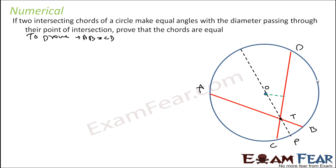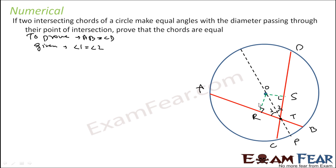What is given is that angle 1 is equal to angle 2. We have to prove these two chords are equal. What we can do is draw perpendicular lengths. Let this be R and let this be S. If we can prove OR is equal to OS, then we can easily say AB is equal to CD. We have already proved that if the distances of chords from the center are equal, then the chords are equal. So we have to prove that OR is equal to OS.